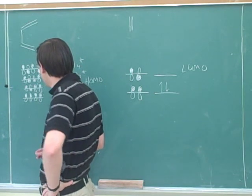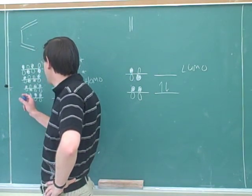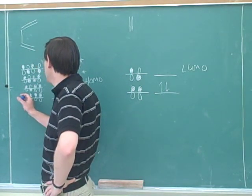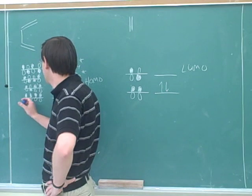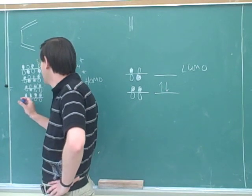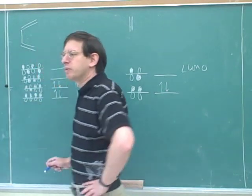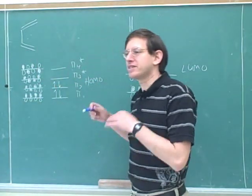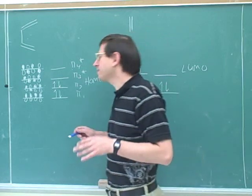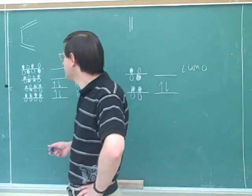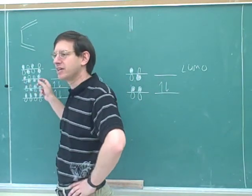Something I forgot to mention last time is when we talked about how when we have two shaded regions next to each other, or two unshaded, that's a bonding interaction. But we didn't talk about why that's a bonding interaction. We should briefly remember that all of this is based on a kind of wave theory.